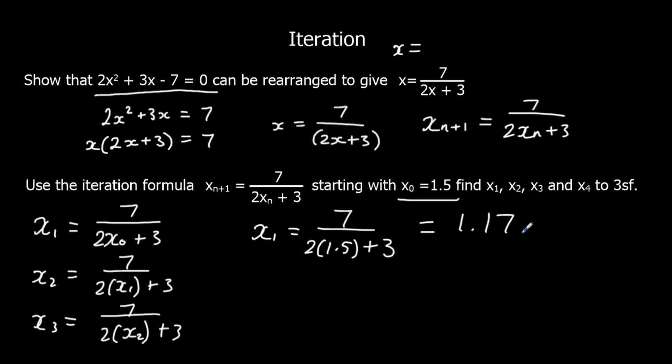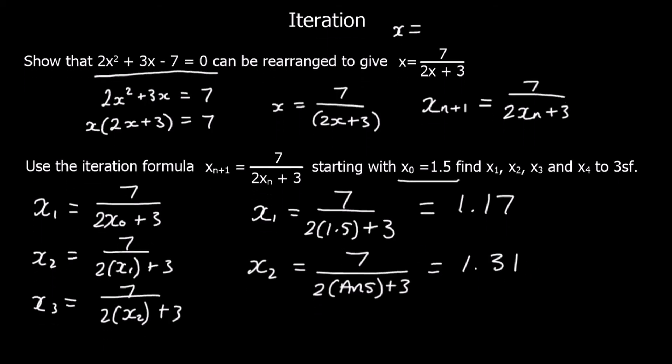Now we could substitute that back in. But in order to get a more accurate answer, and to make it easier, we can just, in our calculator, write ANS button, which you should be able to find on your calculator next to the equal sign. So 7 over 2 times the answer plus 3, and just type that into the calculator, and you get out x2. So 1.31 to 3 significant figures.